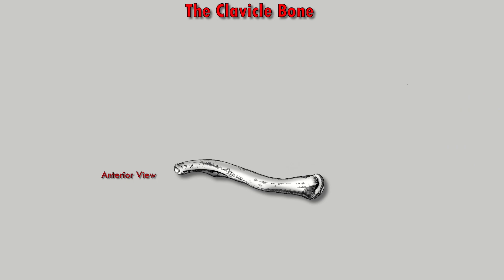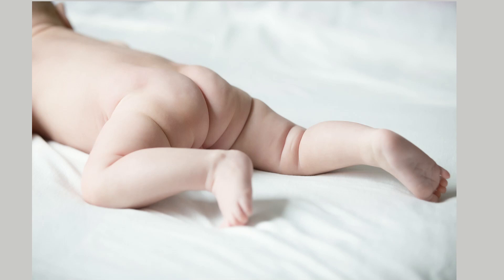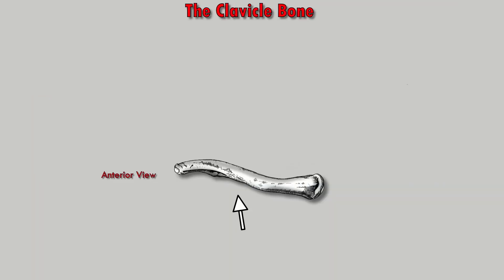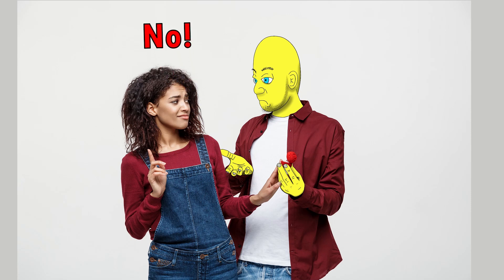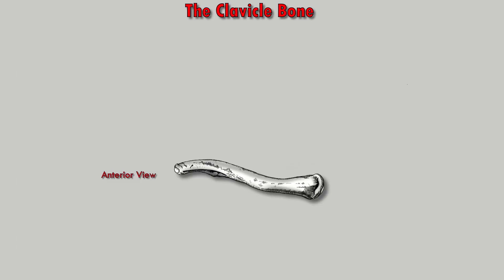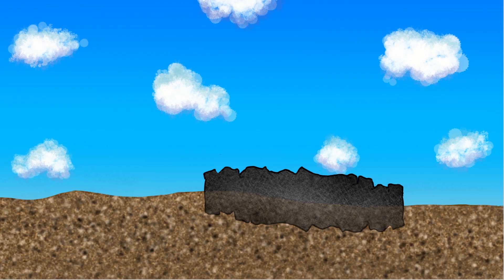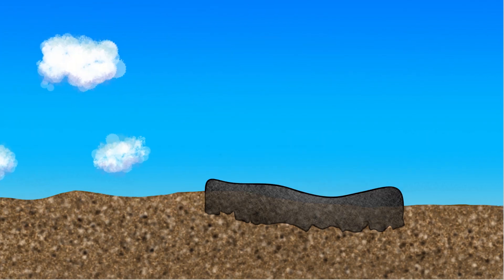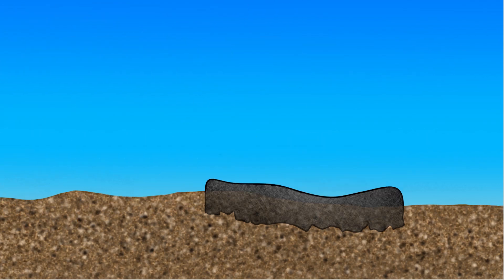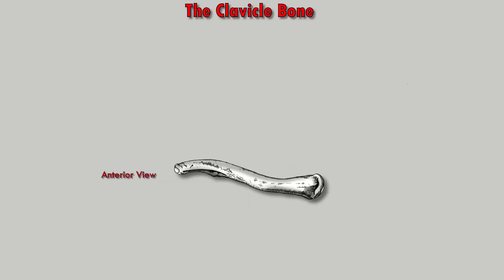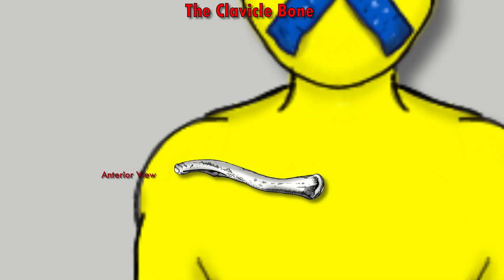In person, the clavicle is easy to identify because the superior portion of the bone is mostly smooth, while the inferior portion is rough. Think of a rock buried in the sand — wind and water will make the top of the rock smooth, but the buried portion will remain untouched and rough. Overall, the top is smooth and the bottom is rough.